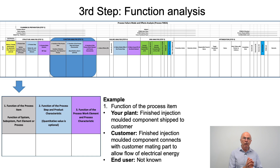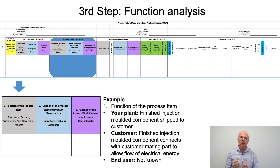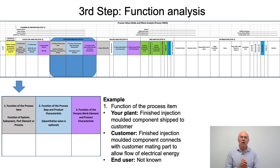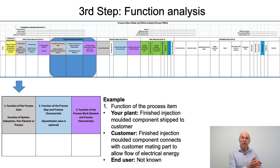When completing the FMEA format for step three, similar to step two we have three boxes to complete. The first box is the function of the process item — the component we are producing for General Motors. What we want to produce is a finished injection molded component that we will ship to the customer to meet the customer drawing requirements. The customer wants to take our finished injection molded component and connect it with the relevant mating part. In some cases an organization may also know the end user requirements, though in this particular case the organization may not know the application the product will be used in.